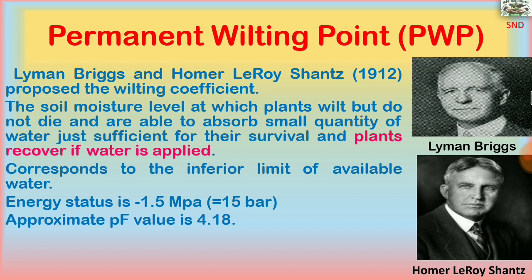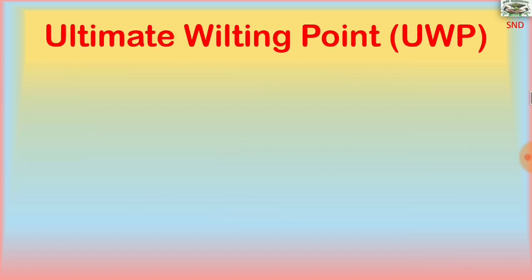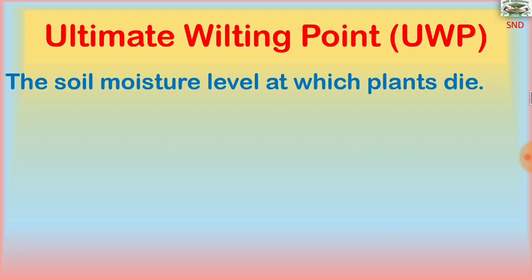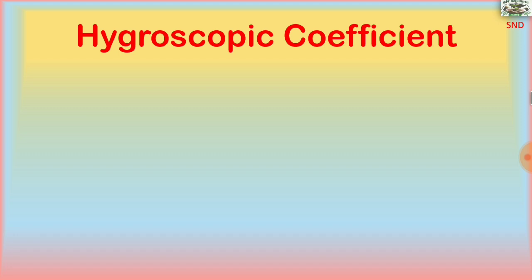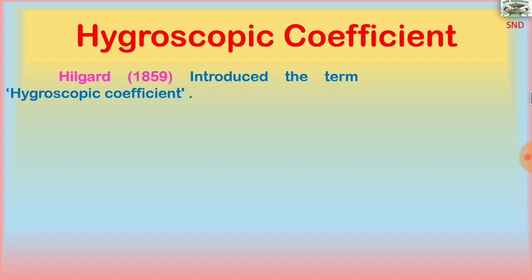The permanent wilting point corresponds to the inferior limit of available water. Its energy status is minus 1.5 megapascals, equal to 15 bar, with an approximate PF value of 4.18. The ultimate wilting point is the soil moisture level at which plants die, with an energy status of minus 6 megapascals, equal to 60 bar.